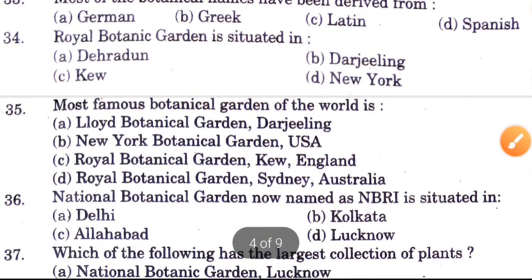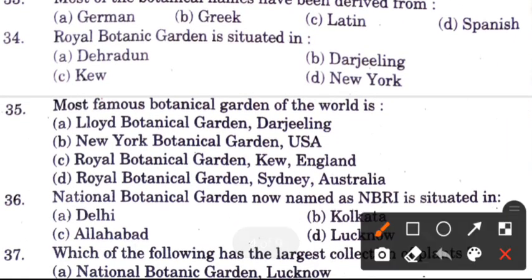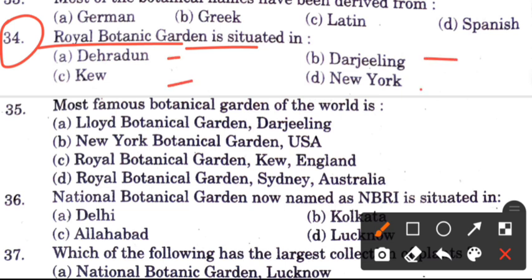Question 34: The Royal Botanical Garden is situated in — options are Dehradun, Darjeeling, Kew, or New York. The answer is C, Kew.